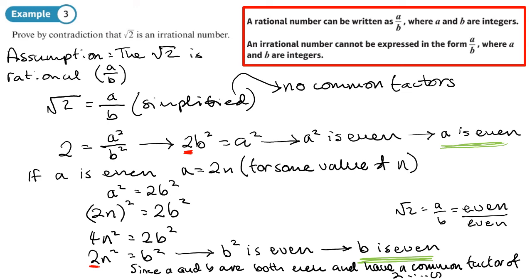Since we have a contradiction, √2 is irrational. It's worth memorising this proof because it's essentially the same for any similar case — like proving √3, √5, or √7 are irrational. It's the same type of process.